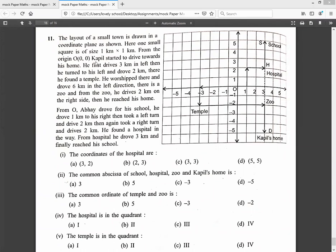From the origin O, Kapil starts to drive towards his home. He first drives three kilometers left, then turns left and drives two kilometers where he found a temple. He worshiped there and drove six kilometers in the left direction to the zoo. From the zoo, he drives two kilometers to the right and reaches home, marked as point D.